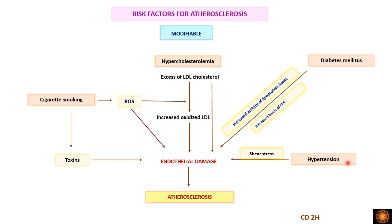In hypertension, there is more stress on the vessels. As pressure increases, there is shear stress on the endothelial cells, causing endothelial damage. In this way, these four modifiable conditions — hypercholesterolemia, cigarette smoking, diabetes mellitus, and hypertension — are risk factors for the development of atherosclerosis.